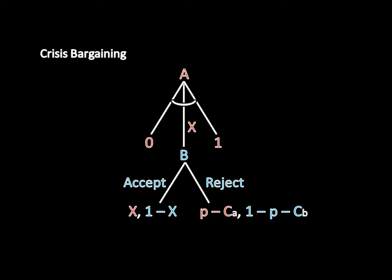So, in equilibrium, A demands P plus CB, B accepts, and the states resolve this crisis without going to war.